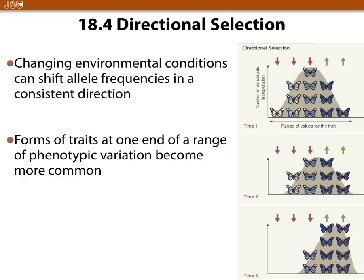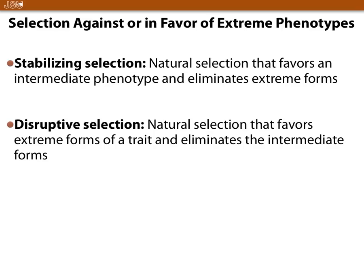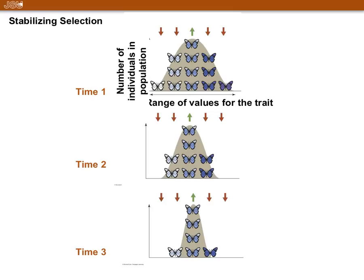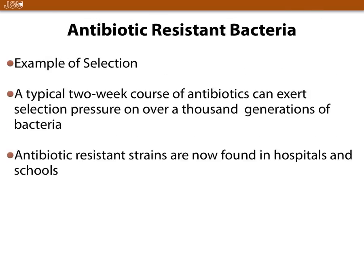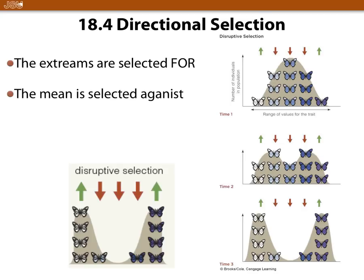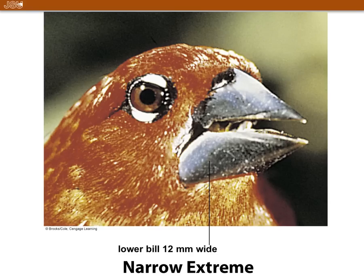Directional selection is shown with butterflies — the left is being selected against (red arrows pointing down) and the right is being selected for (green arrow pointing up), and over time we see that selection. Stabilizing selection is when the average phenotype is selected for — the mean is selected for and the extremes are selected against. Disruptive selection is the opposite — the mean is selected against and the extremes are selected for. Know the definition of all three.